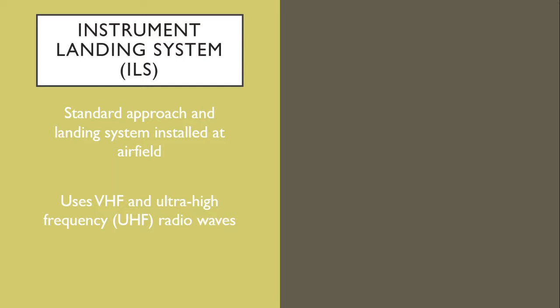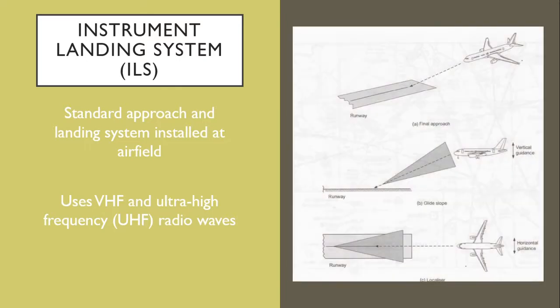Automatic Direction Finder, Very High Frequency Omnidirectional Range, and Distance Measuring Equipment are only used for en route navigation. Instrument Landing System is used for precision approaches and landings.